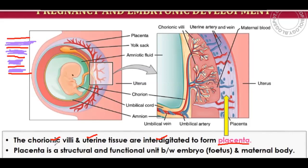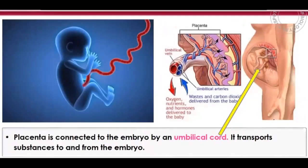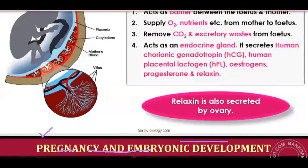The placenta is a structural and functional unit between the embryo and the maternal body, responsible for the exchange of materials and nutrients. The placenta is attached with the help of the umbilical cord, which transports substances to and from the embryo — taking waste material away from the embryo and delivering useful material to it.